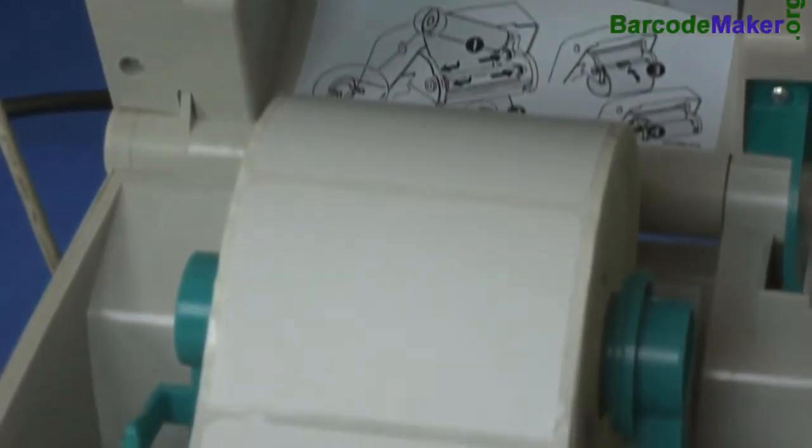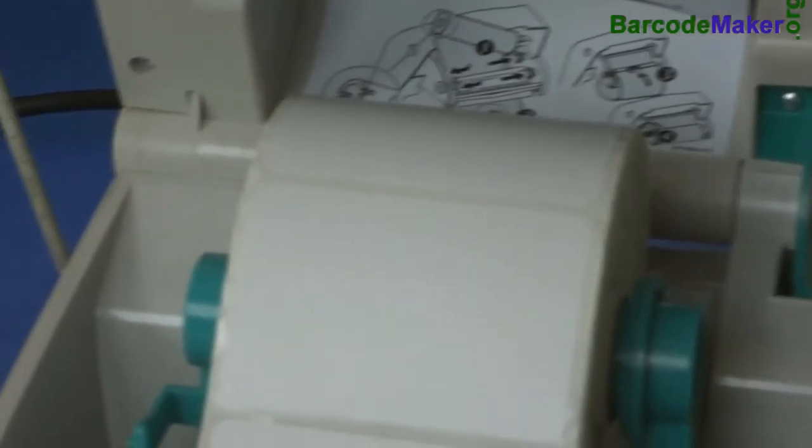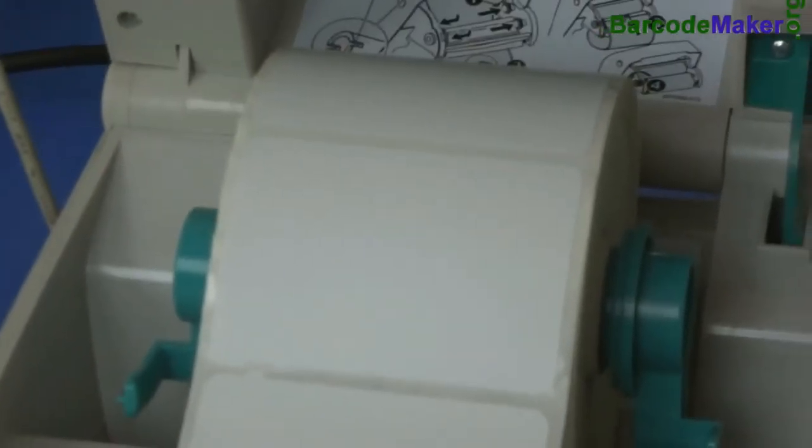When you close the printer head, the print area comes in contact with the rolls and your labels get printed.